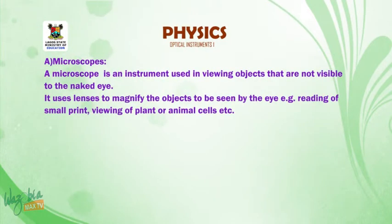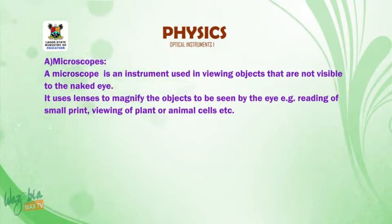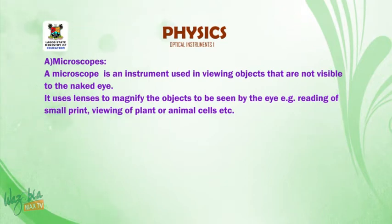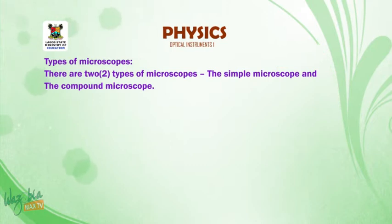Let's start with the microscope. A microscope is an instrument used in viewing objects that are not visible to the naked eye. It uses lenses to magnify the objects to be seen by the eye — for example, reading of small prints, viewing of plant and animal cells, and so on. Types of microscopes.